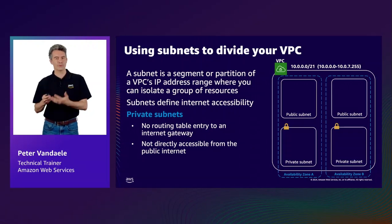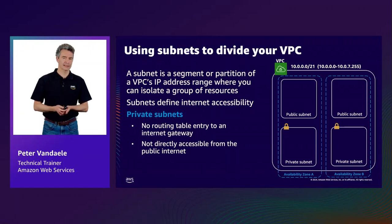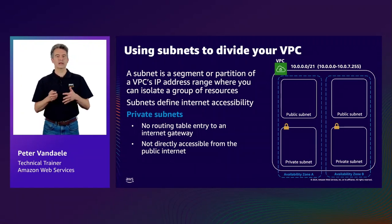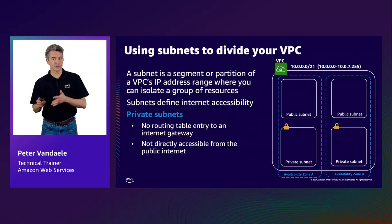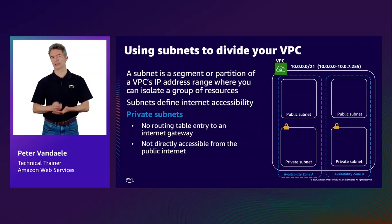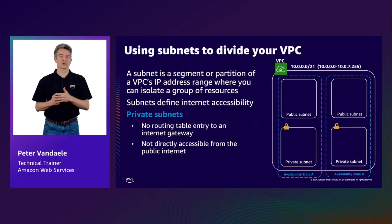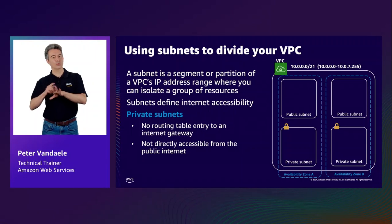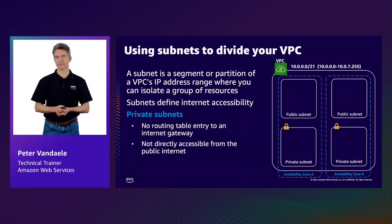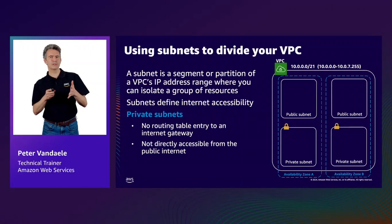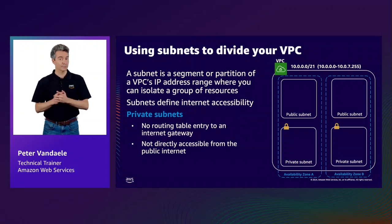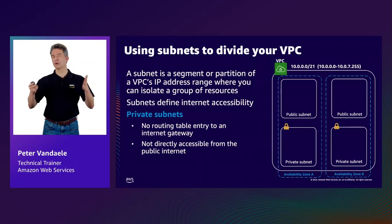Private subnets do not have direct public internet access, which means they are protected from bad actors on the internet. This lets you place your backend systems — such as databases or application servers — in private subnets with no internet access. You can have multiple VPCs in the same region or different regions, however you cannot have a single VPC spanning multiple regions.